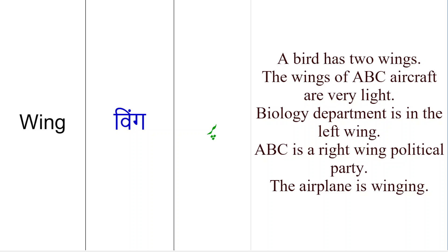Iske alawah doostho, aapne dekha hoga ke kaha jata hai ki jab jahaz urate hain, toh parinday agar jahaz se takra jayen toh woh kafi khatarnaak ho saktay hain. Toh jo airports pe hote hain, woh birds ko sirf paron ka nishana lete hain taka woh mare na — toh usko bhi winging kaha jata hai. Toh us waqt bhi hum wing ka word use kertai hain.